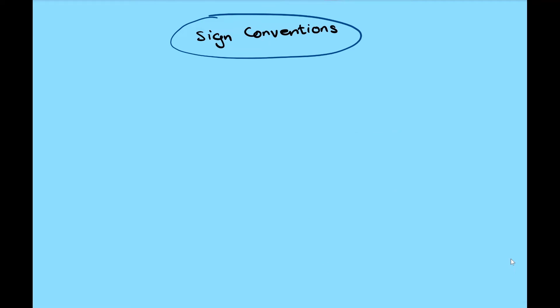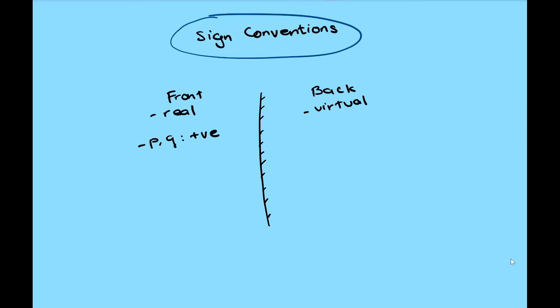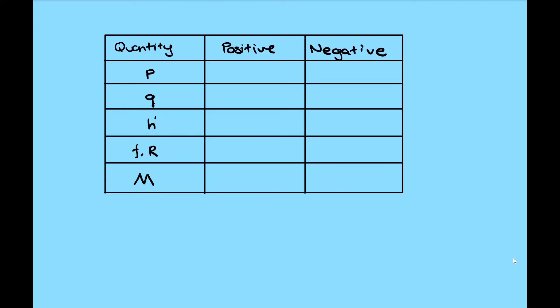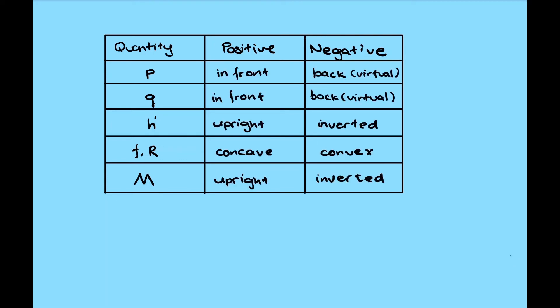Let's have a look at the sign convention. The left side is the front side of the mirror. The quantity located on this side is real, while the quantity located on the right side is virtual. Therefore, the quantity on the left side has a positive value, while the quantity on the right side has a negative value. For a mirror, when light is incident from the front side, it is reflected without entering the back side. Overall, each quantity carries its own meaning depending on whether its value is positive or negative.